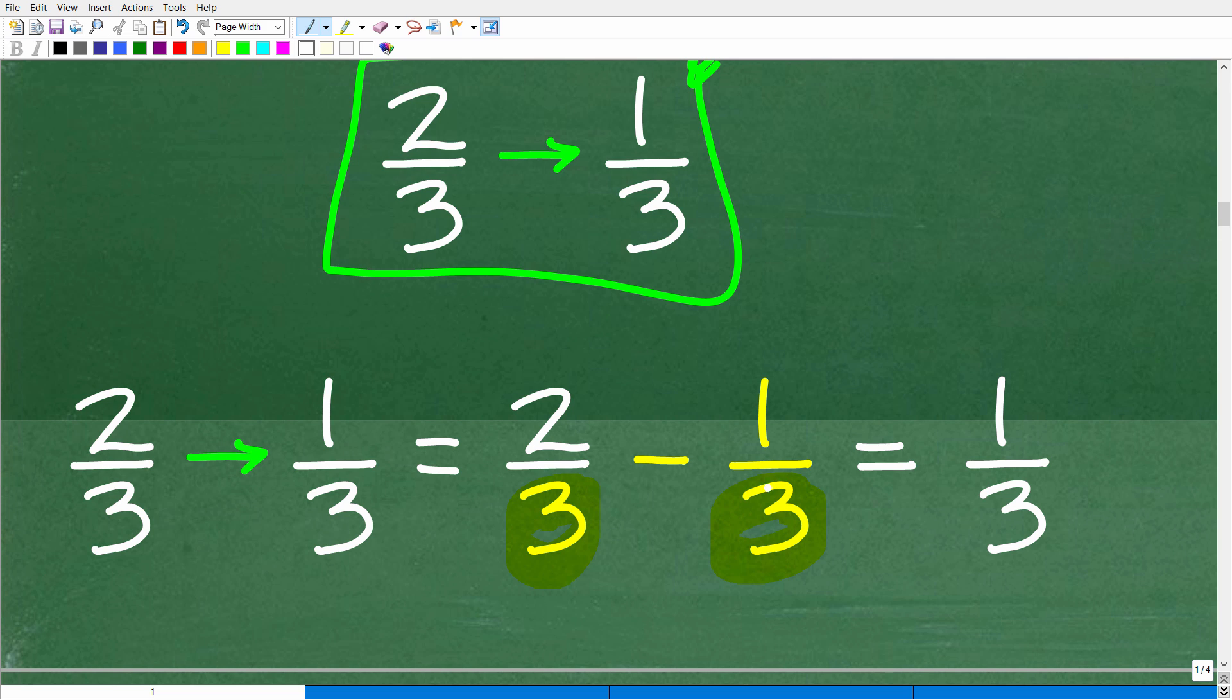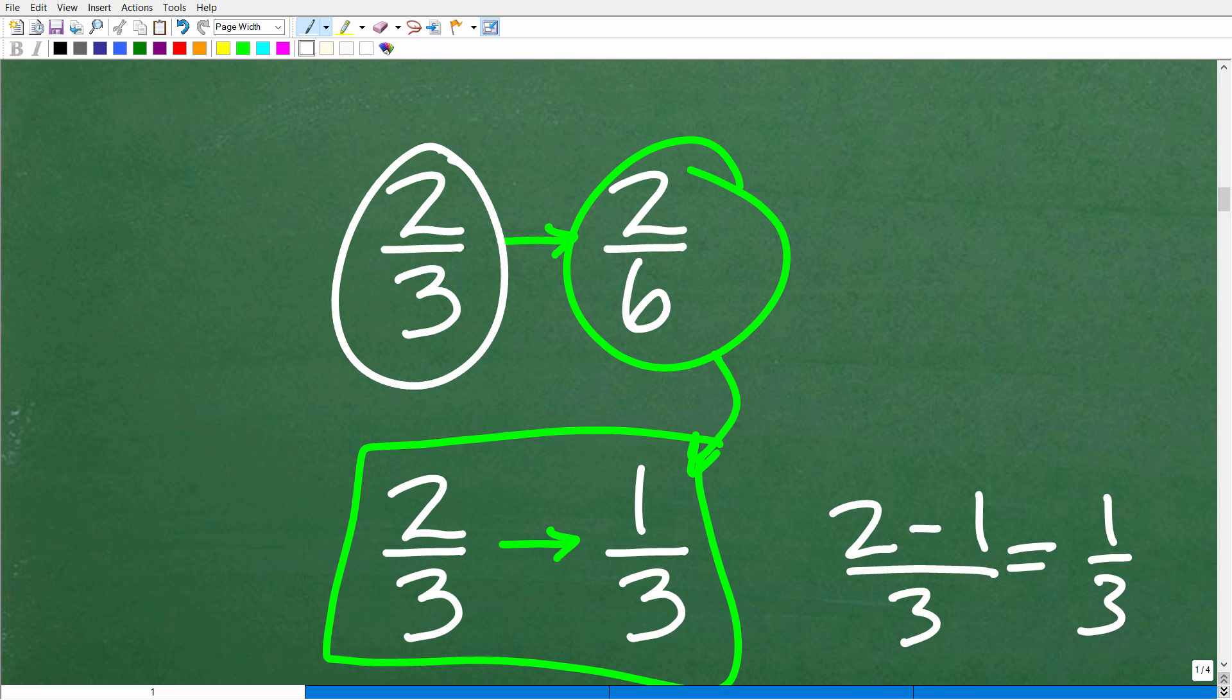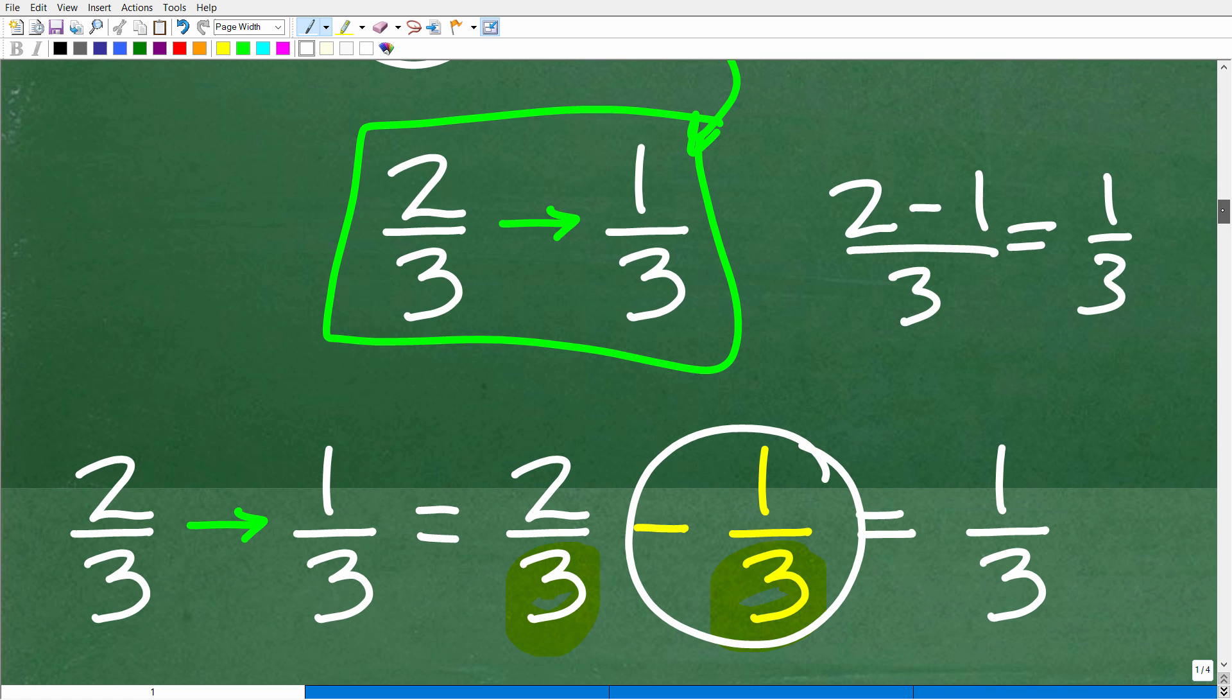All right, so let's go ahead and just do a quick review. Two-thirds minus one-third. When the denominators are the same, all we need to do is subtract the numerator. So this is going to be two minus one over three. Two minus one, of course, is one over three, or one-third. All right, so one way we can go from two-thirds to one-third is to literally subtract one-third from this number. So from the first number, if we subtract a one-third, we'll end up with a one-third or a two-sixths. So that's one possible way of going from two-thirds to two-sixths.